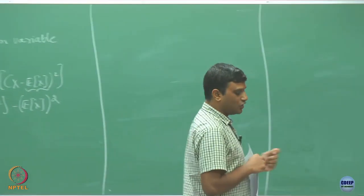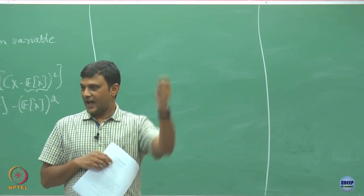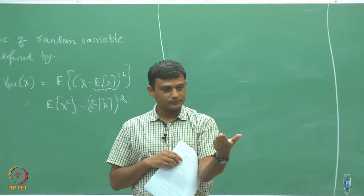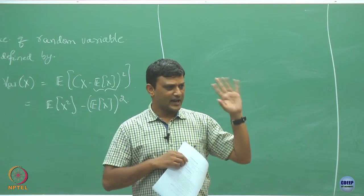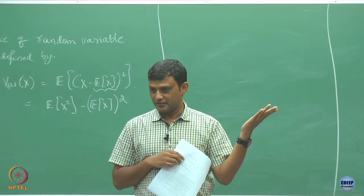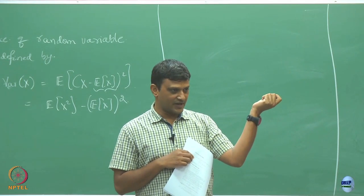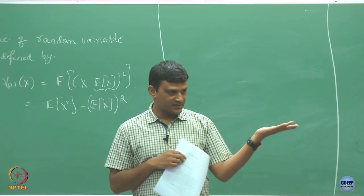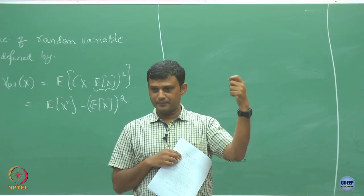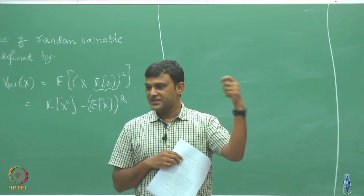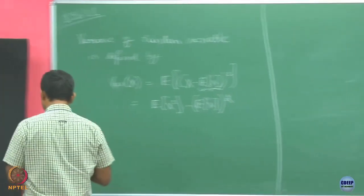What you would be interested in is: if I perform my experiment, what is the probability that my outcome will be larger or smaller than my mean value? Suppose you take the example of height of a population. Let us say the mean value is 5 feet. If I pick an arbitrary person, it is not necessary that his height is going to be 5 feet — it may be more or less than 5. You may be interested in asking: what is the probability that the sample I pick has a value larger than 5? That comes from something called Markov inequality.